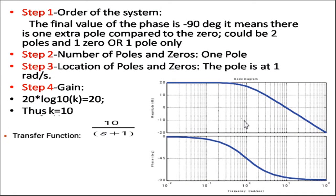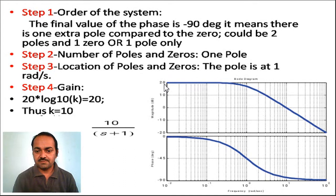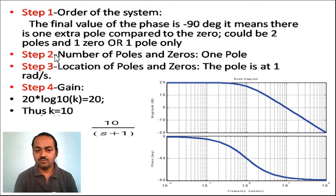Now consider one example. Here you can see the magnitude plot and the phase plot. The magnitude plot starts from 2 and goes to minus 2, while the phase plot starts from 0 and goes to minus 90 degrees, with frequency on the x-axis. In step one, the final value of the phase is minus 90 degrees, meaning there is one extra pole compared to the zeros — it could be one pole and no zero. In step two, there is only one pole.